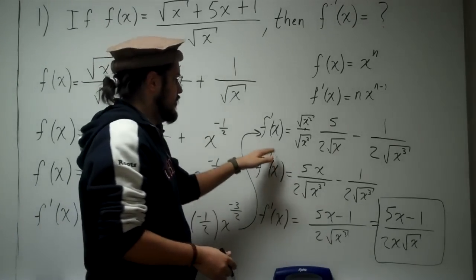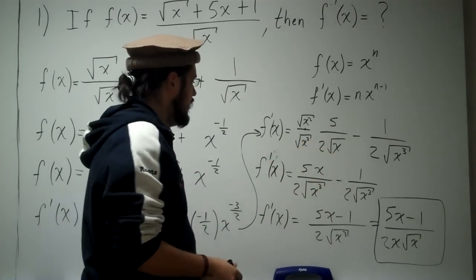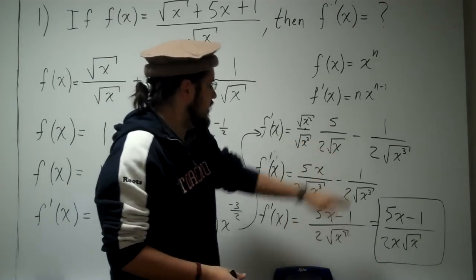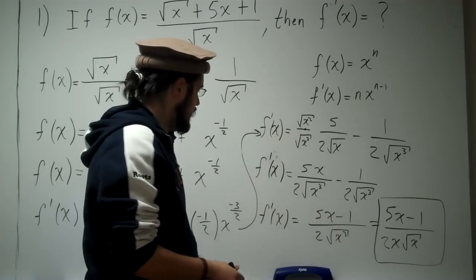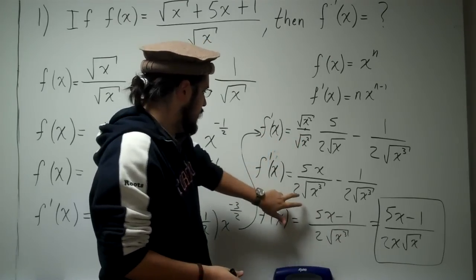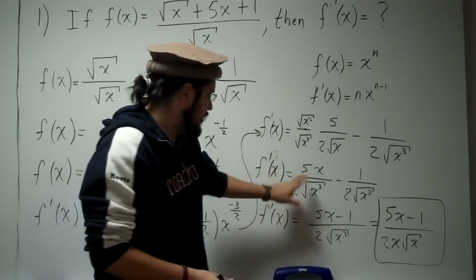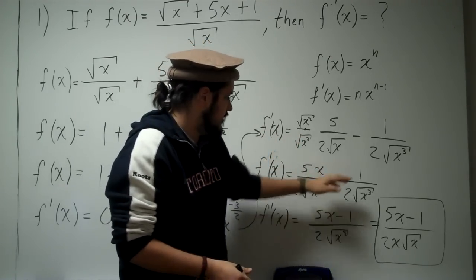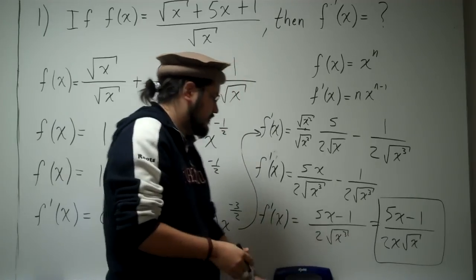Then I came over here and did some more algebra — found the LCD in order to combine the two fractions, obtained the combined fraction, and then subtracted the numerator to get the final result.